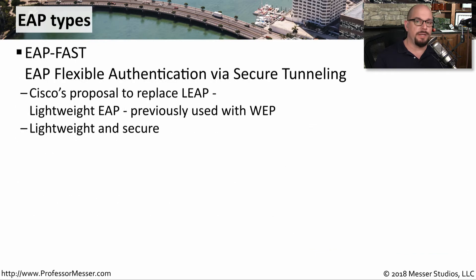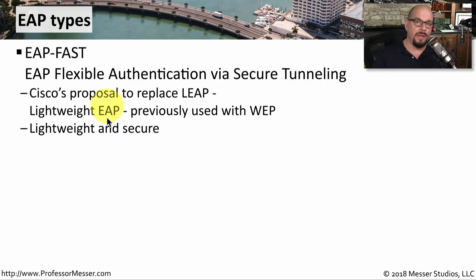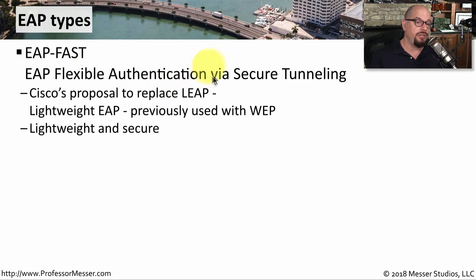Cisco was an early adopter of wireless technologies. On some of their first access points that used WEP encryption, they used LEAP, or Lightweight EAP, to provide authentication. When WEP was replaced with more advanced encryption methods, Cisco updated their authentication to EAP-FAST. FAST stands for Flexible Authentication Via Secure Tunneling. This provided a lightweight authentication method, but also increased the security needed for wireless networks.